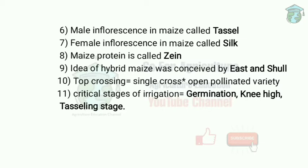A very important question: male inflorescence in maize is called tassel. Two inflorescences occur in maize — male and female. Detasseling is the removal of the tassel for better pollination. Female inflorescence in maize is called silk. The stage when male flowers arise is called the tasseling stage, and when female flowers arise it is called the silking stage.